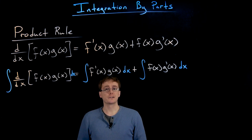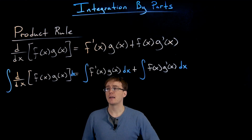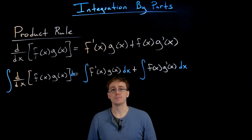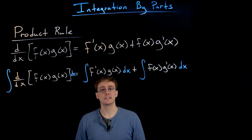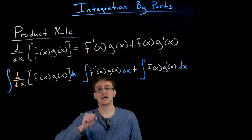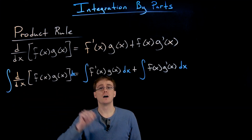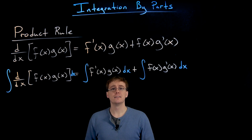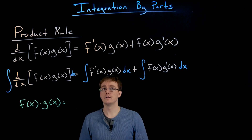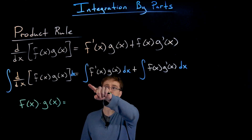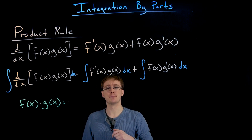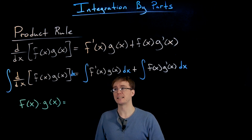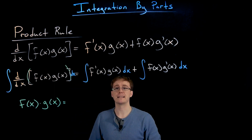To make progress we invoke the fundamental theorem of calculus: taking the antiderivative of a derivative gets you back to where you started — they undo or cancel each other out. On the left hand side we have the integral of the derivative of f times g, which is just going in a circle, so they cancel out and the left hand side simplifies very nicely to just f times g.